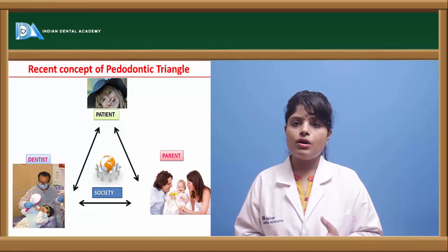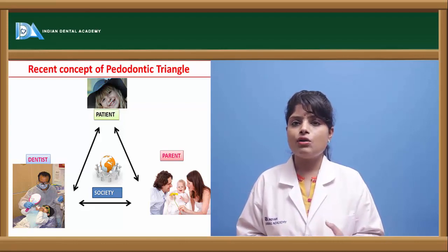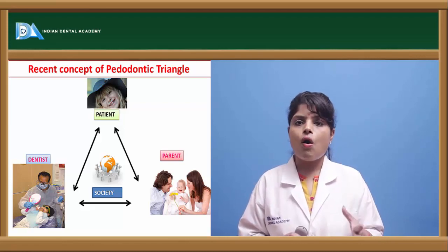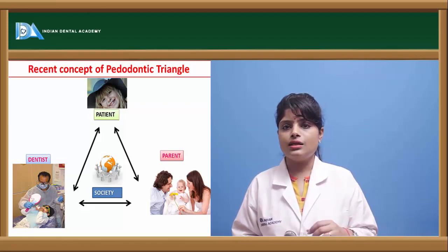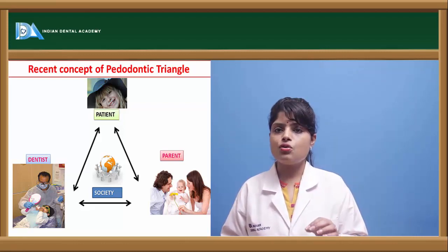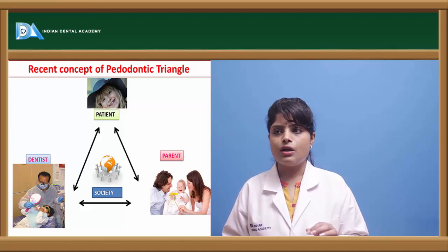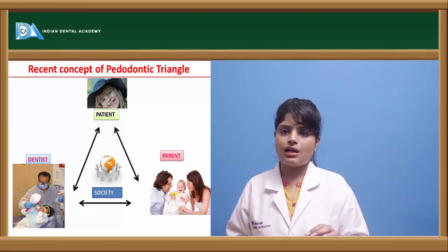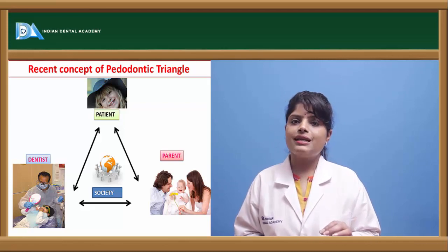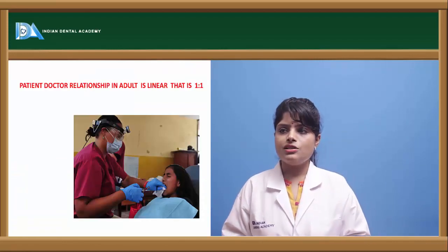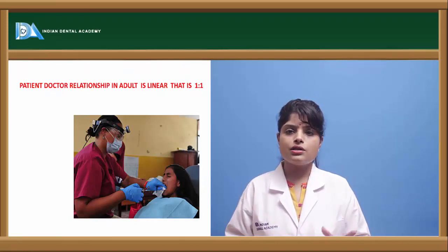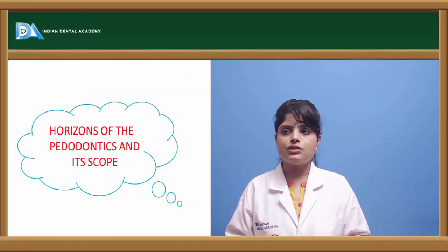Recently, another element was added to the pedodontic triangle: society. Even the oral health care needs and development of the child — whether emotional, psychological, physiological, or physical — depend on society. So society is placed at the center of the triangle because it plays a major role in influencing a child. The pedodontic triangle was given by Dr. G.Z. Wright. Unlike the linear one-to-one patient-doctor relationship in other fields, in pediatric dentistry it is a two-to-one relationship.